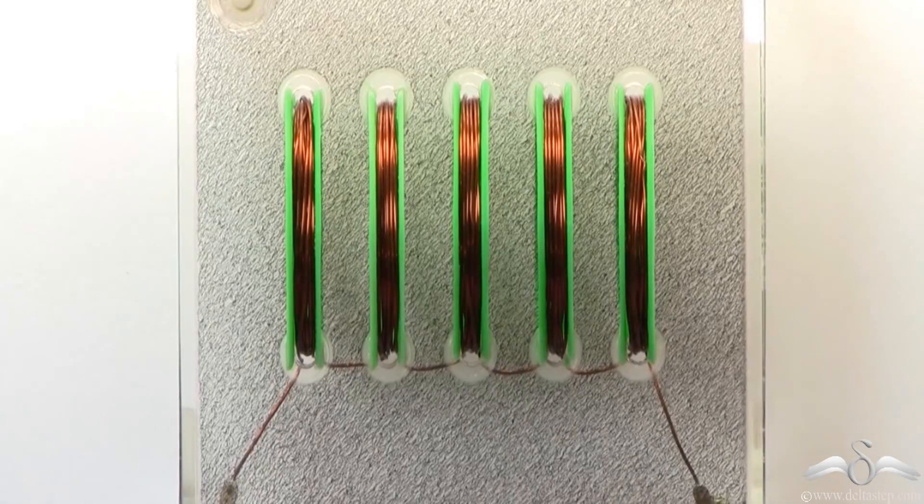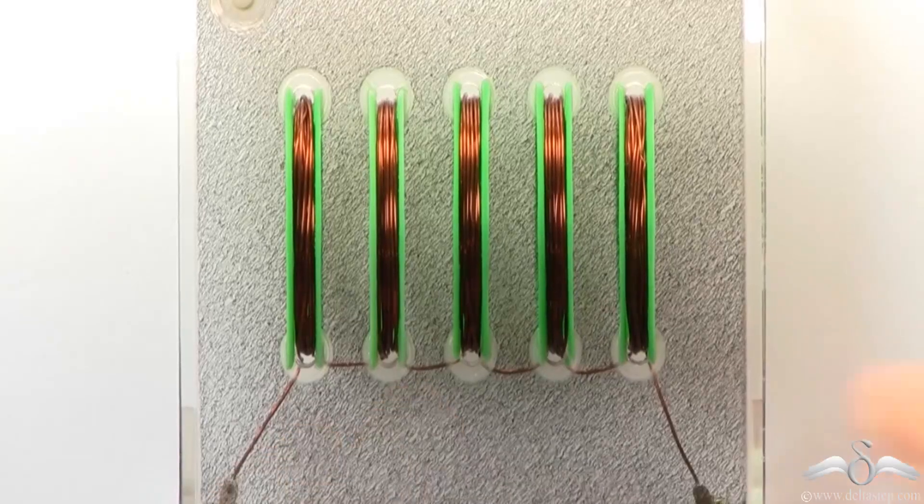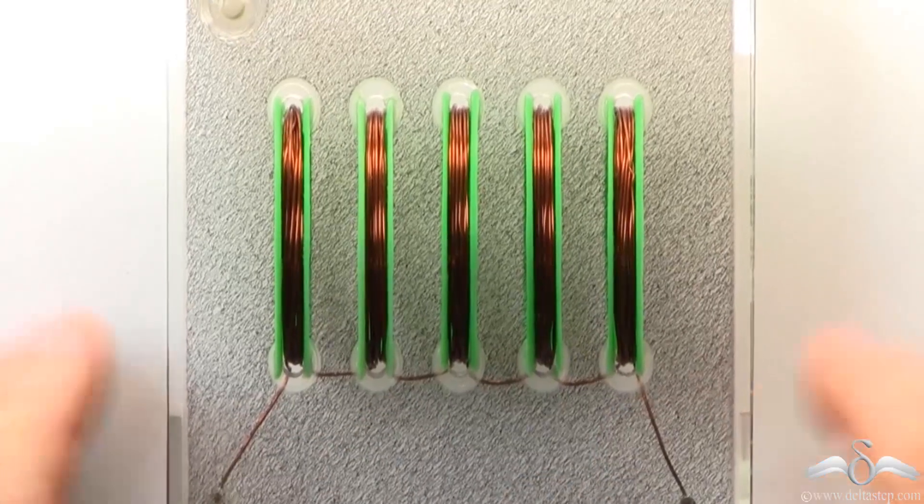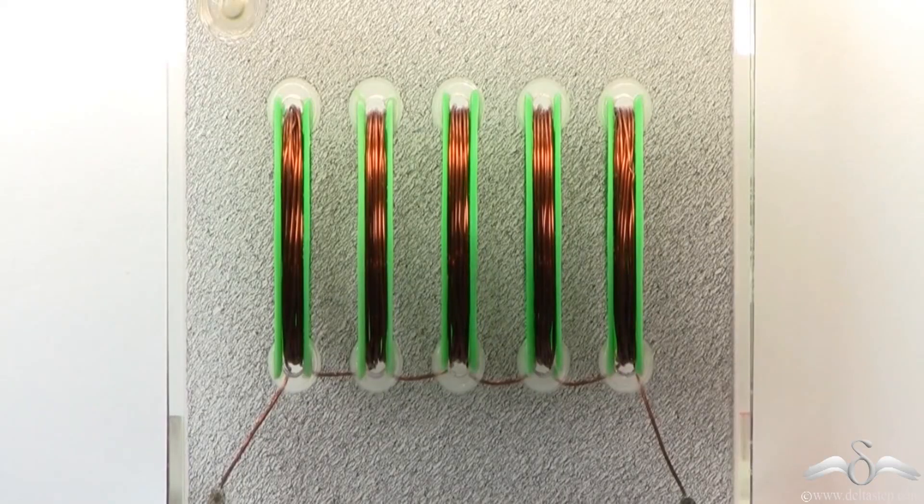In this video you will find that a solenoid has been considered and the iron filings initially when there is no current are randomly placed. Now notice closely what happens when current starts flowing.